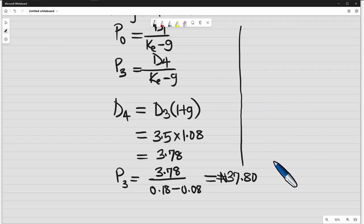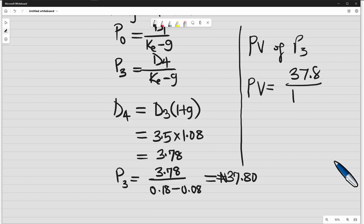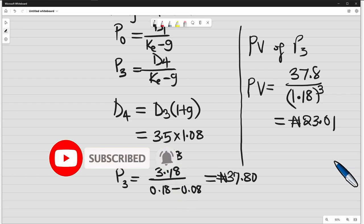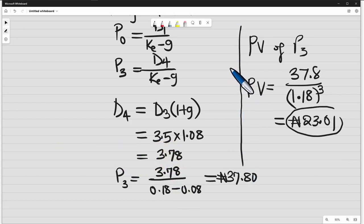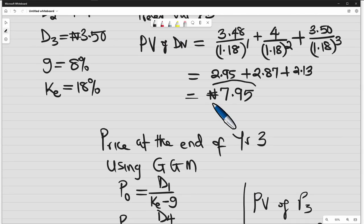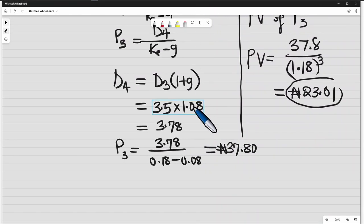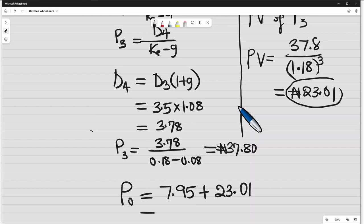Now this price, we need to find the present value of P3. So the present value of P3 will be P3, which is 37.8, divided by 1.18, that is our cost of capital, raised to power 3. So this is 23 Naira 1 kobo. So after you find this, we now add this value with the value that we got earlier. So if we add the two values, then our P0, which is the intrinsic value of the stock, will be 7 Naira 95 kobo plus 23 Naira 1 kobo. So the final answer is 30 Naira 96 kobo.